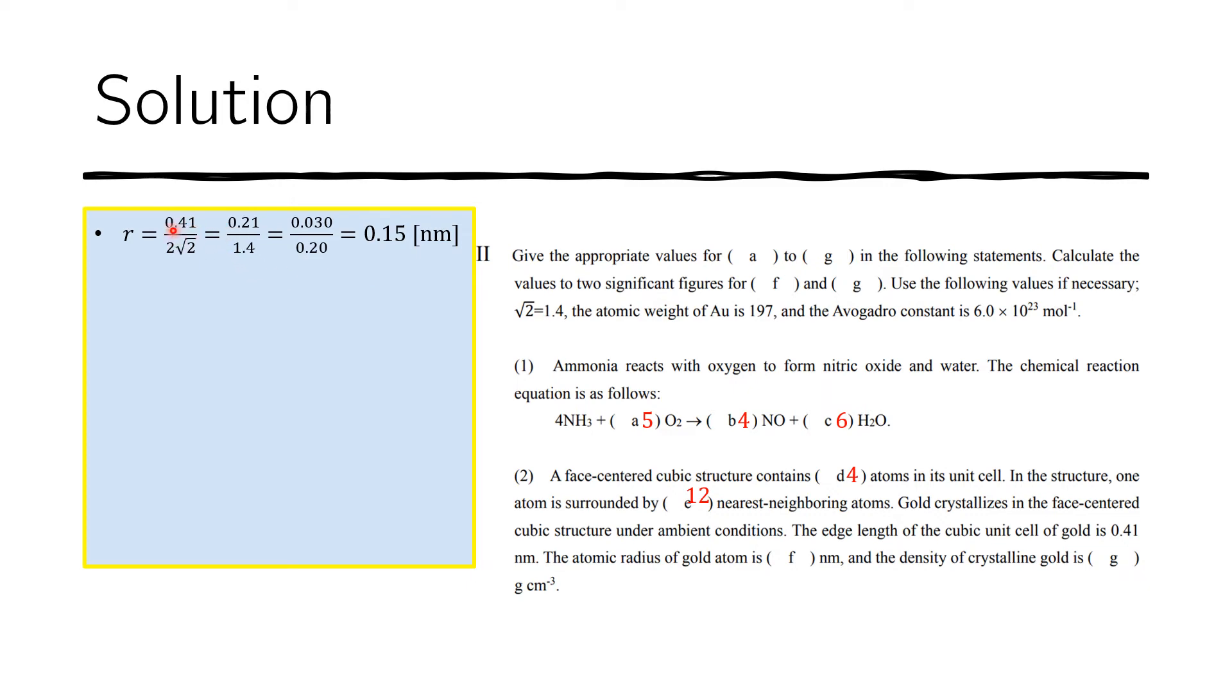So if we do this calculation here to two significant figures, what I do first is I multiply that. I divide the 0.41 by two. There I obtain 0.205. And to two significant figures, that's 0.21.